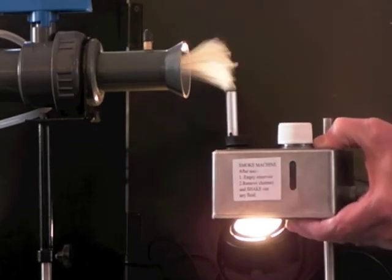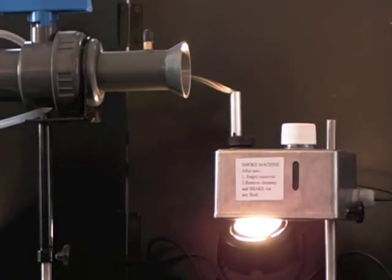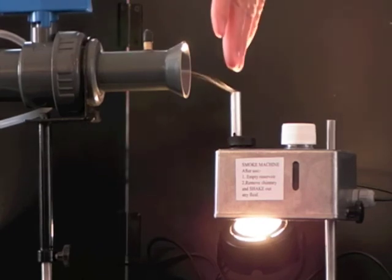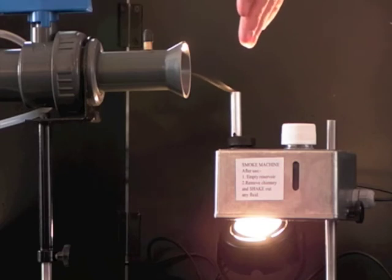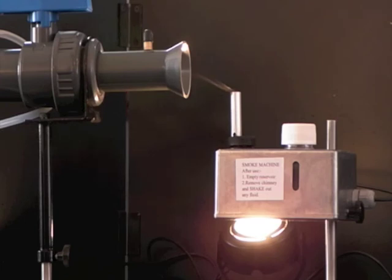So if I now turn off the source and measure the air velocity at that point, I've got the capture velocity for this process. So although there are tables of capture velocities, you can work out your own capture velocity for virtually any process.